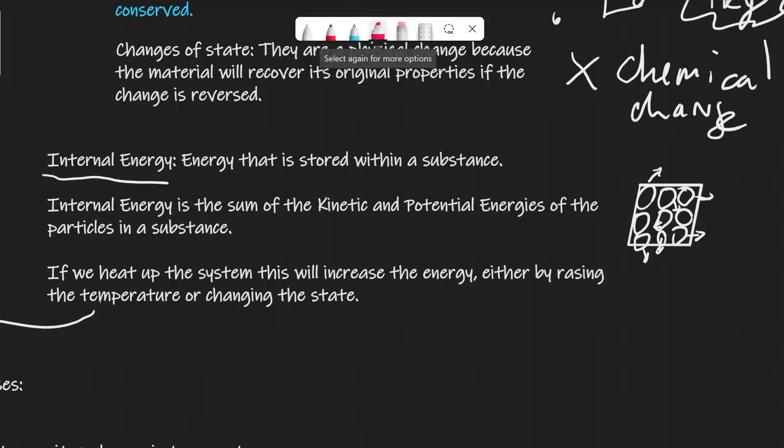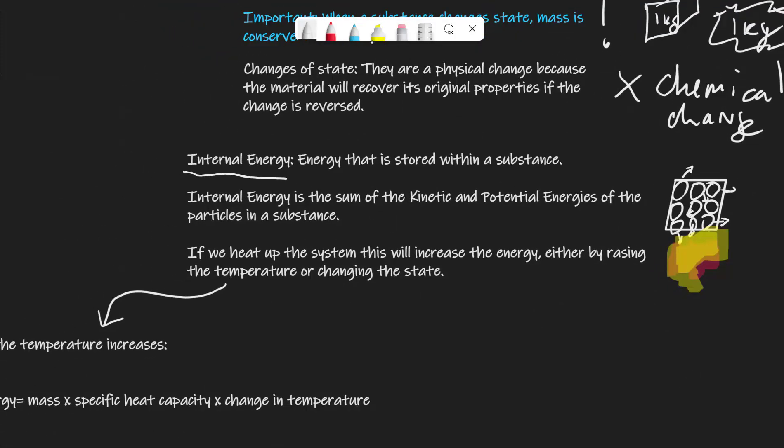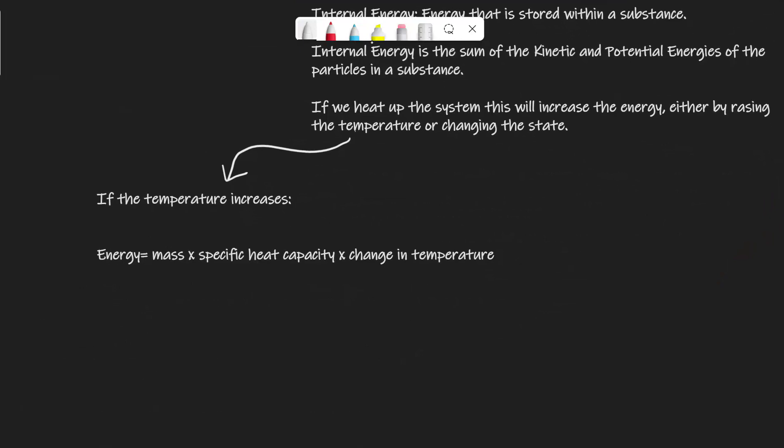If we were to heat up that system, so if we were to heat up the system, this will increase the energy, and it will do that either by raising the temperature or changing the state. If we're raising the temperature, we're actually raising the kinetic energy, and if that happens, only if the temperature increases, the equation that we're going to use is that energy is equal to mass times specific heat capacity times the change of temperature. Mathematically, we write that as ΔE is equal to mcΔθ. We actually looked at this equation at the energy portion of our previous video.